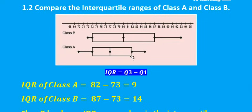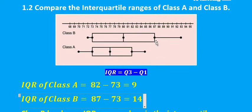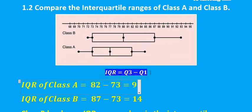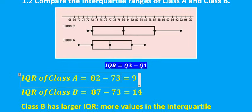For class A, Q3 is 82 and Q1 is 73, so 82 minus 73 gives an interquartile range of 9. For class B, Q3 is at 87 and Q1 is at 73, so 87 minus 73 gives an interquartile range of 14. Comparing the two, class B has a larger interquartile range than class A, which means class B has more values spread within the interquartile range than class A.